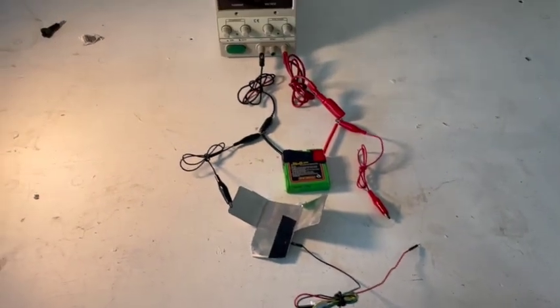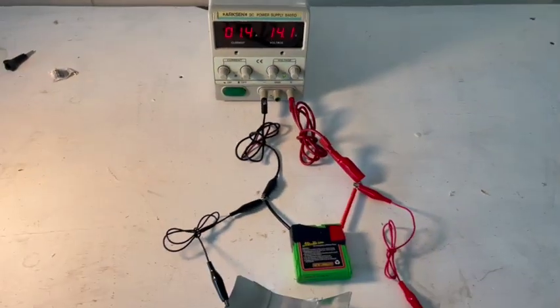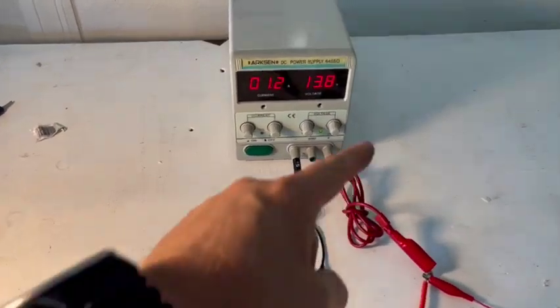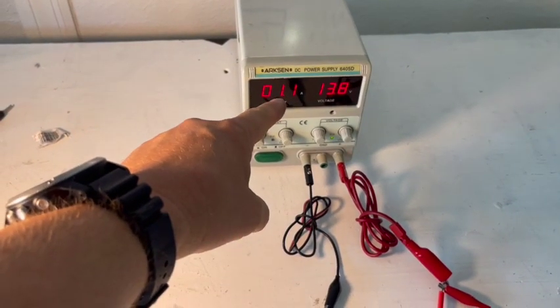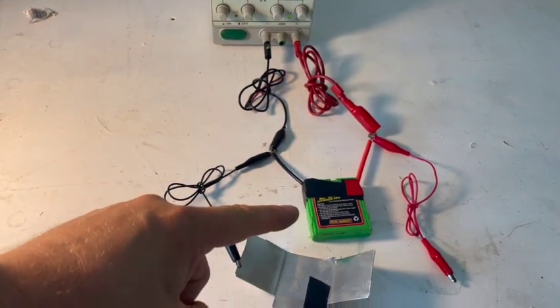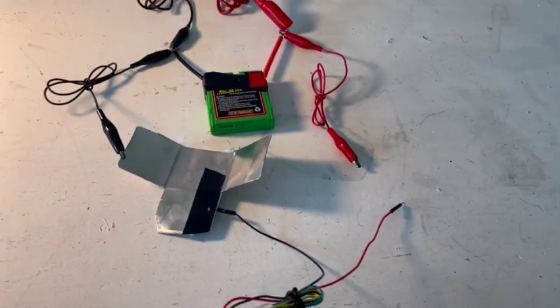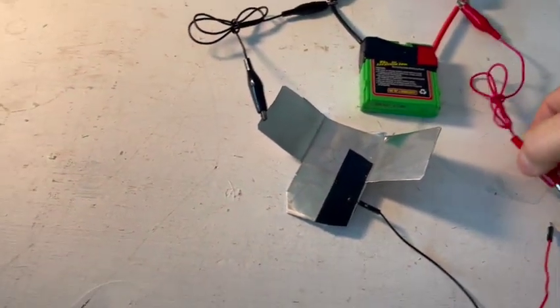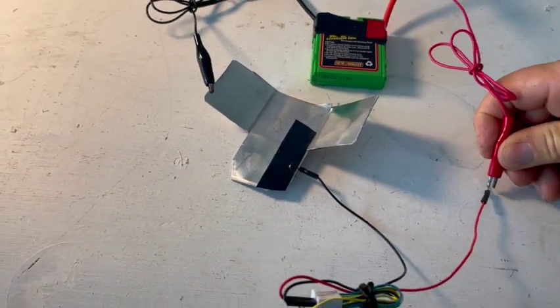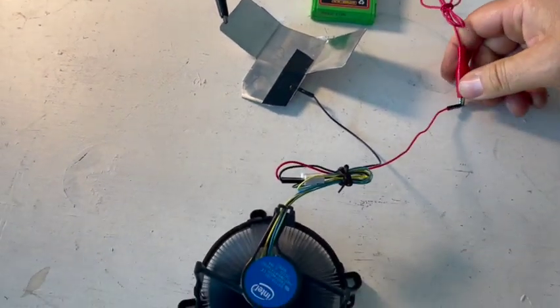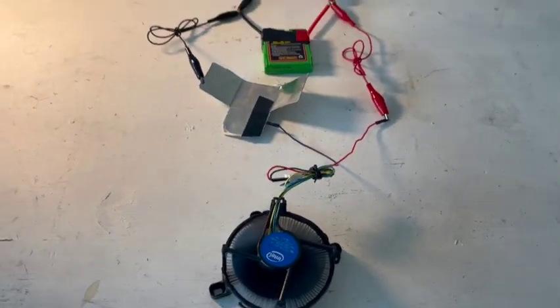So let's fire this up. Okay. There's 14 volts right there. That's the current. So the current's charging the battery currently because I don't have the fan connected. Now, I'm going to go ahead and connect the fan. And now the fan is running.